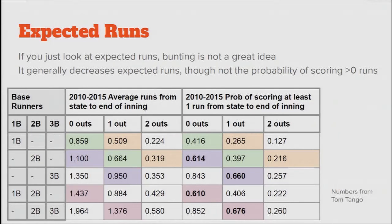If you look at expected run tables, we can see the differences in the two scenarios. The way you read this table — which I got from Tom Tango — is to compare the similarly colored squares. You have a runner on first and zero outs; if a bunt is successful, you move the runner to second and now there's one out. Most of these pairs show the scenario you're moving to is sort of worse. There are a couple where maybe it's slightly better — like the probability of scoring at least one run goes up if you're bunting a runner from second over to third. But generally, you look at these tables and say it's not worth it to bunt. This is the prevailing idea behind why bunting has gone out of favor.